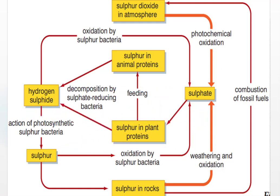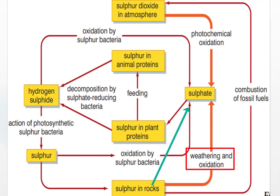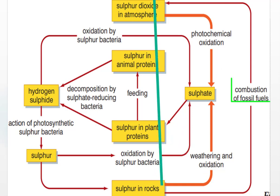Sulfur in the rock can be returned back to the soil in the form of sulfate through two routes. The first way is through weathering and oxidation of sulfur-containing rocks. The second mechanism is through combustion or burning of fossil fuels that are dug up and extracted from the rocks. Then, through combustion, this sulfur in the fossil fuels is released to the atmosphere in the form of sulfur dioxide.